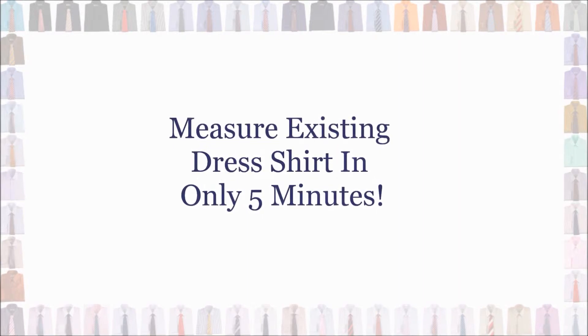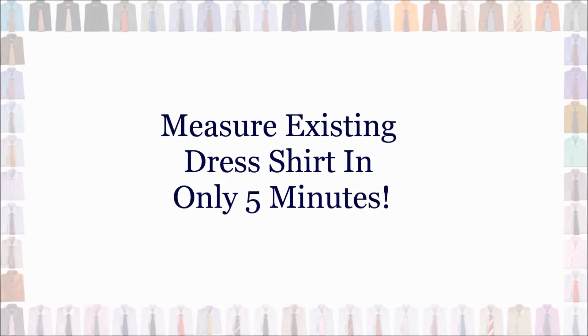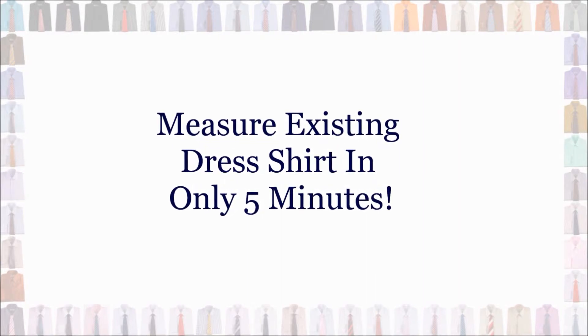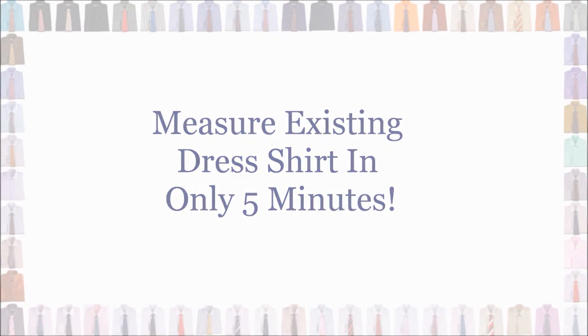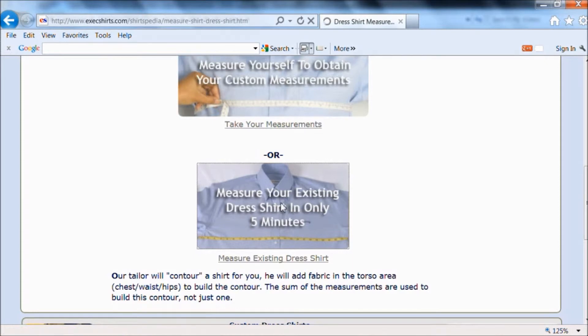You can measure an existing dress shirt in only 5 minutes. This you can do on your own using either a ruler or a tape measure. Click on the link provided.